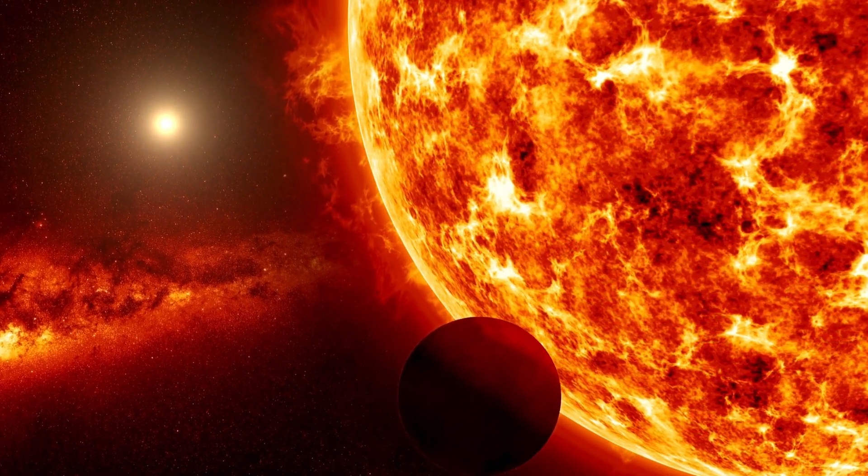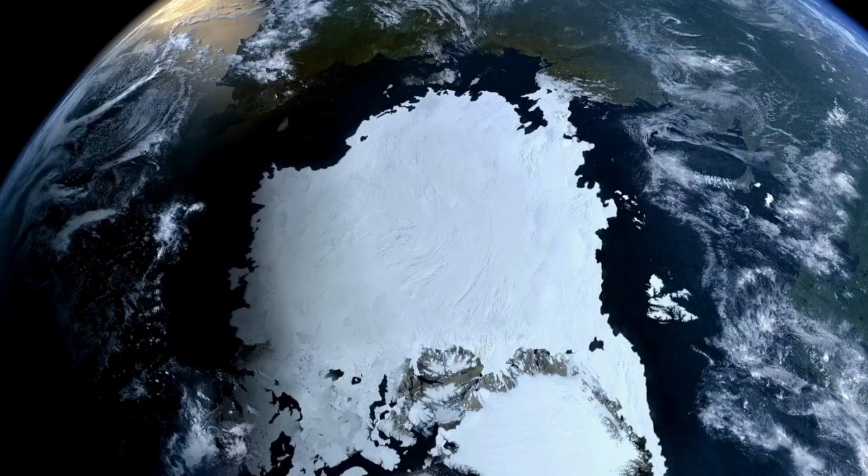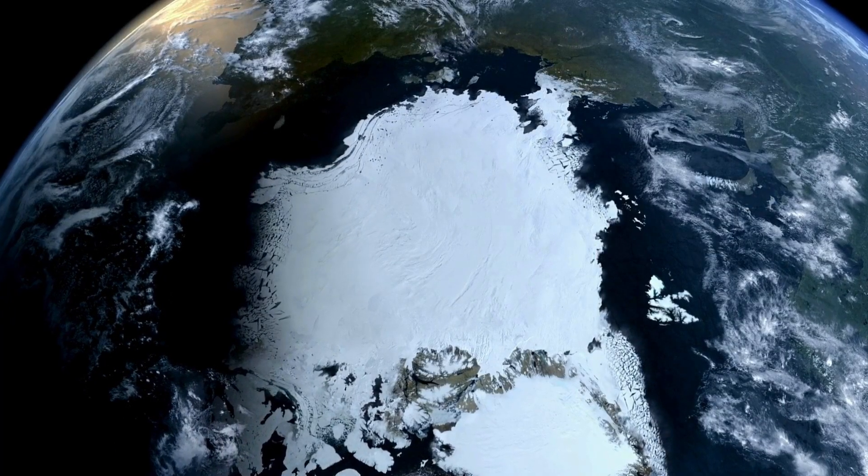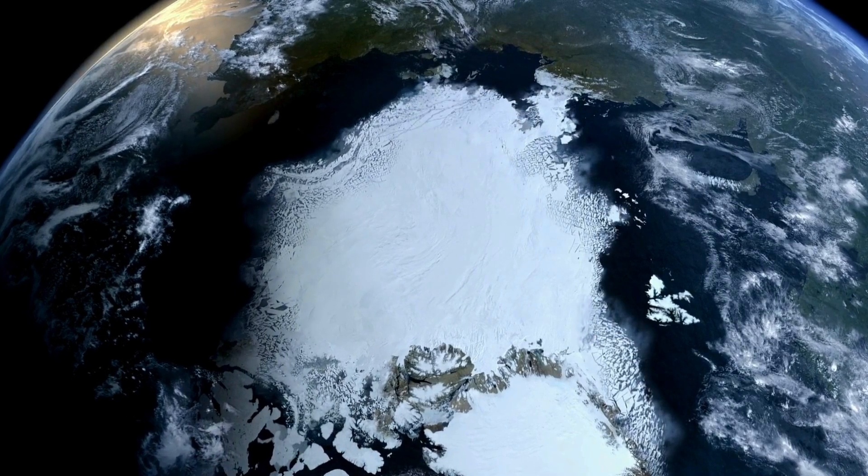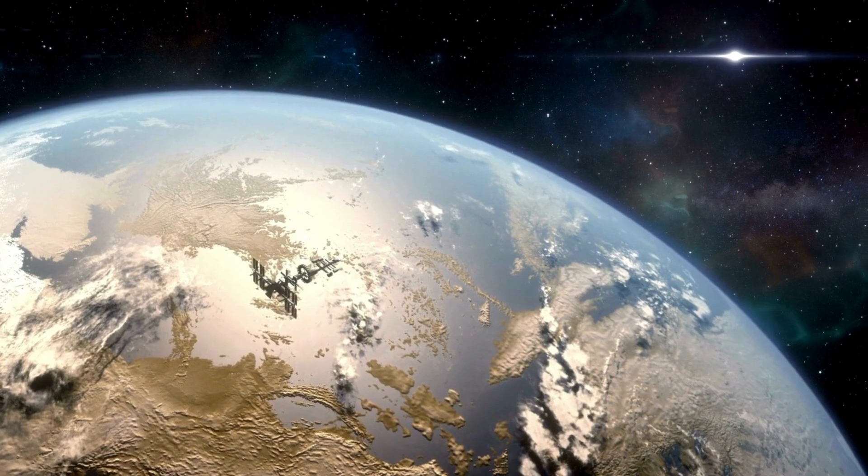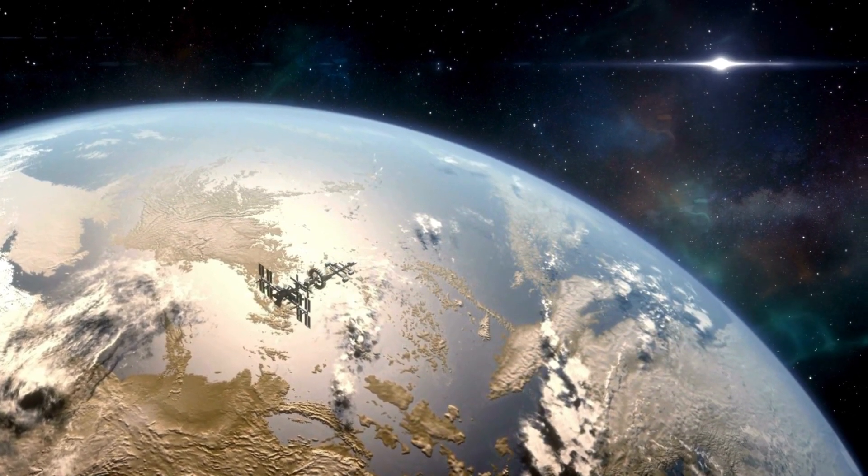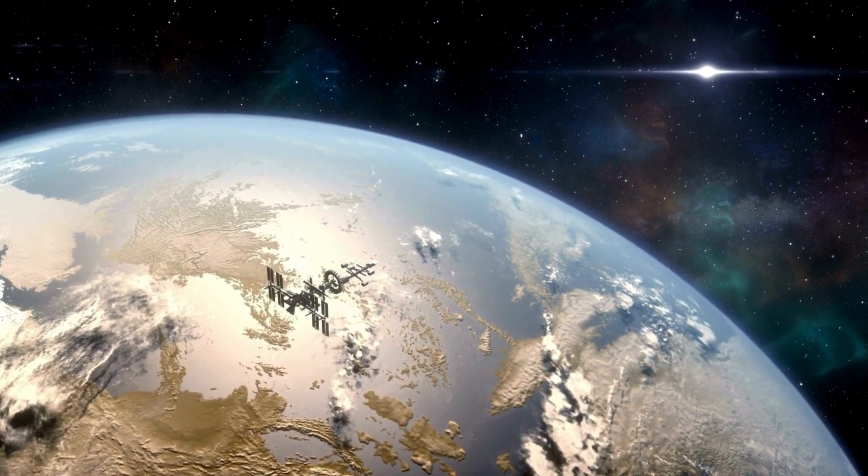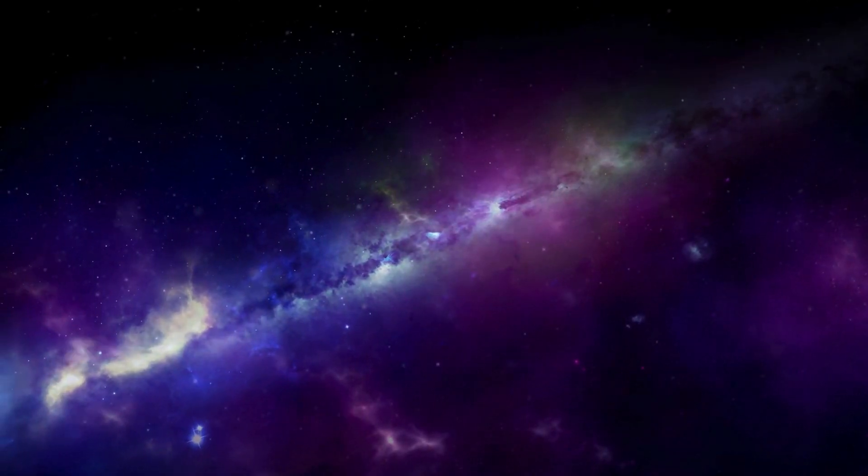The star associated with this exoplanet, Proxima Centauri, is classified as a red dwarf, characterized by its relatively cool temperature of 2,872 degrees Celsius. It is significantly less massive than our Sun and emits only about 0.001 times less light.